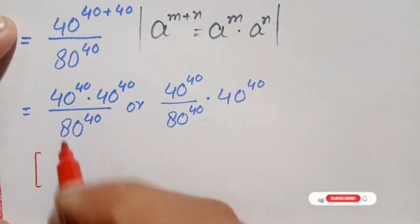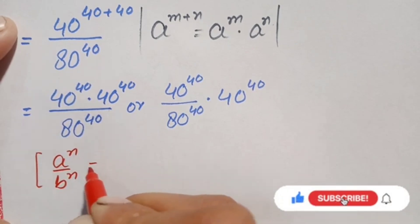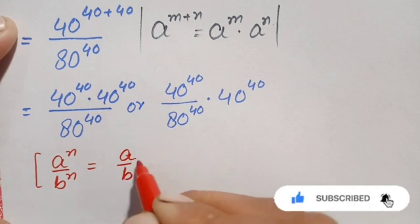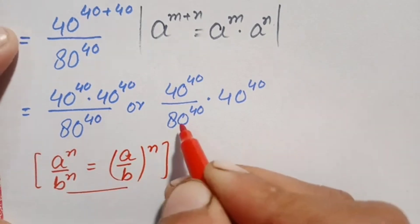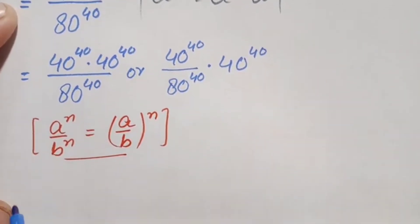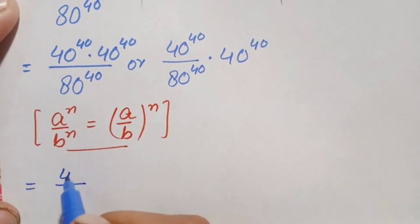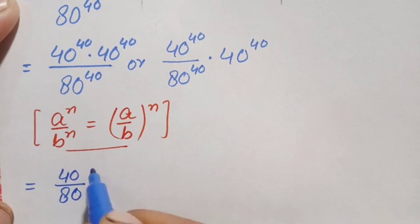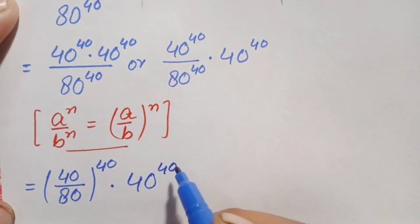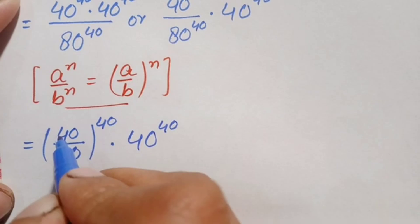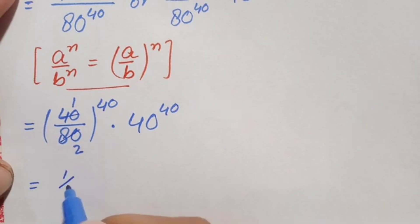The identity is: a raised to power n divided by b raised to power n equals (a/b) whole raised to power n. Applying this, we get (40 divided by 80) whole raised to power 40, times 40 raised to power 40. Simplifying 40/80 gives 1/2, so we have (1/2) raised to power 40 times 40 raised to power 40.